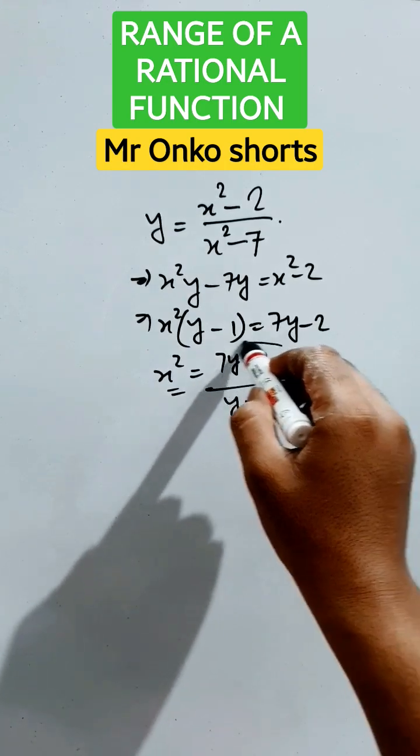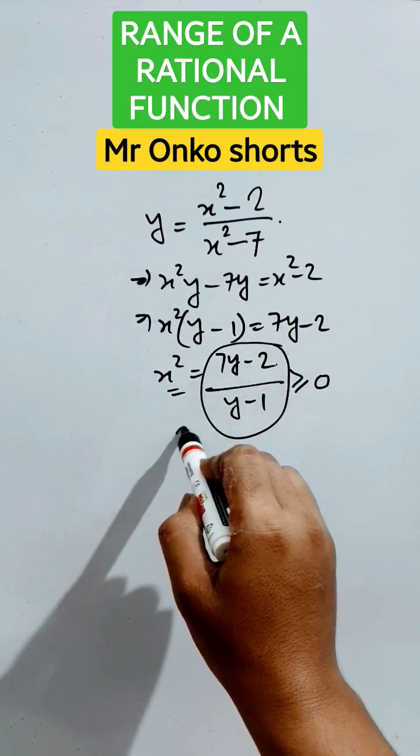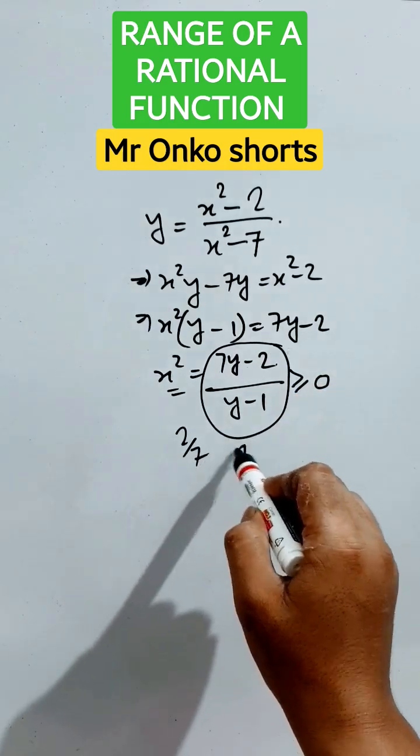Using inequality properties, the critical points are 2/7 and 1.